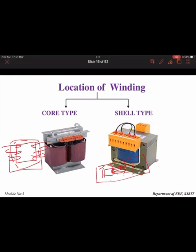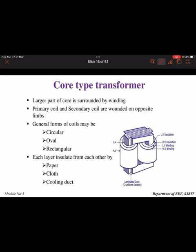In the core type, the primary winding is placed on one side and the secondary winding on the other yoke. As you can observe, on the core the winding is surrounded — the core is surrounded by the winding. The primary coil and secondary coil are wound on opposite limbs and kept separated. The coils may be circular or rectangular in shape. Between the thin lamination sheets, insulated sheets such as paper, cloth, or cooling ducts are used.